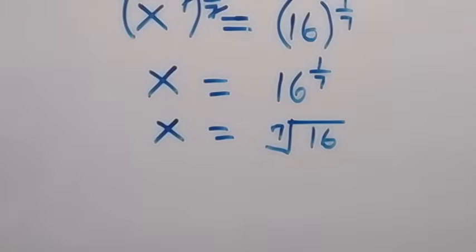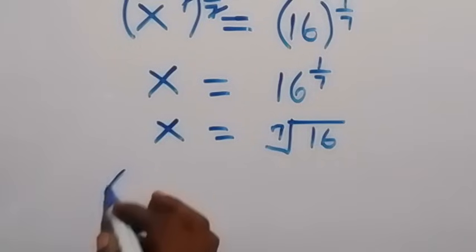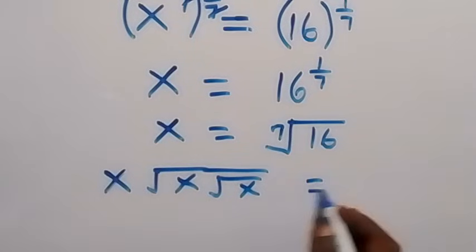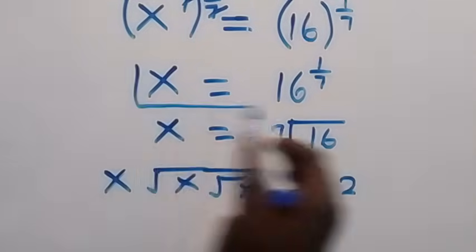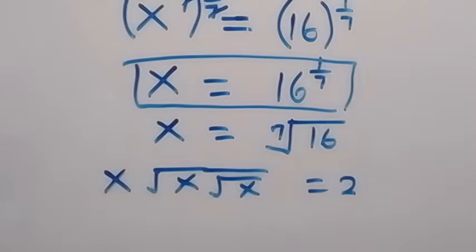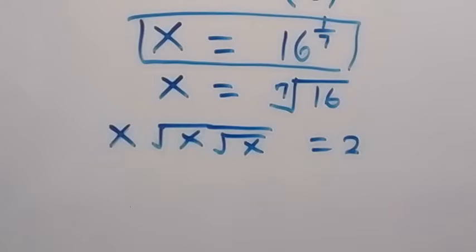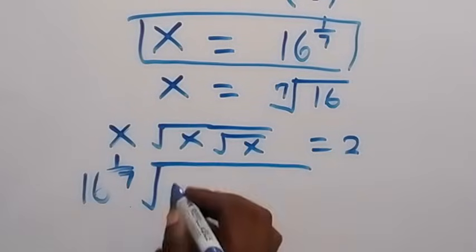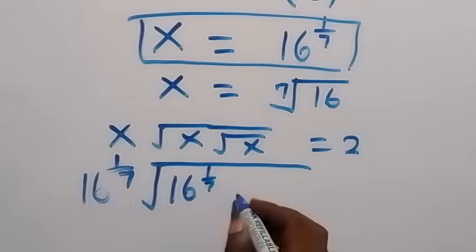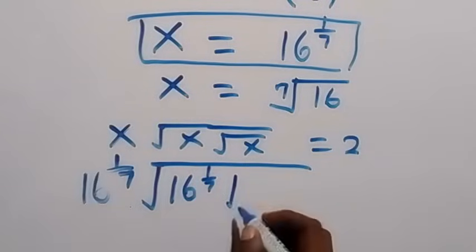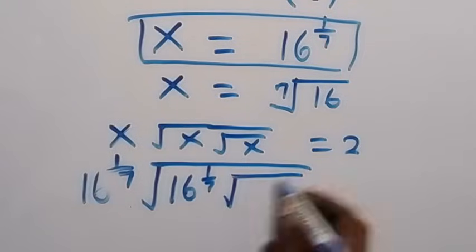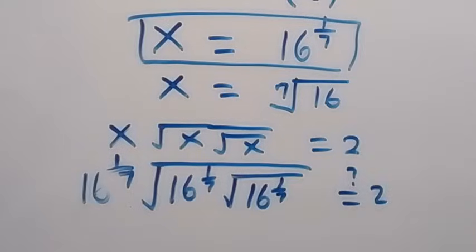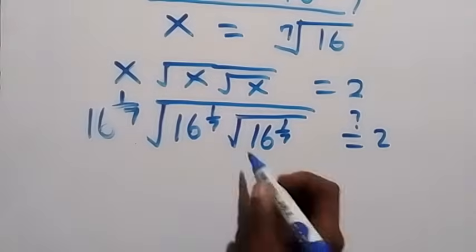Now let's check our answer. We have x root x then root x equals 2. When we put x equal to 16 raised to power 1 over 7, this becomes 16 to the power 1 over 7, times square root of 16 to the power 1 over 7, then inside that we also have square root of 16 to the power 1 over 7, and this should equal 2.